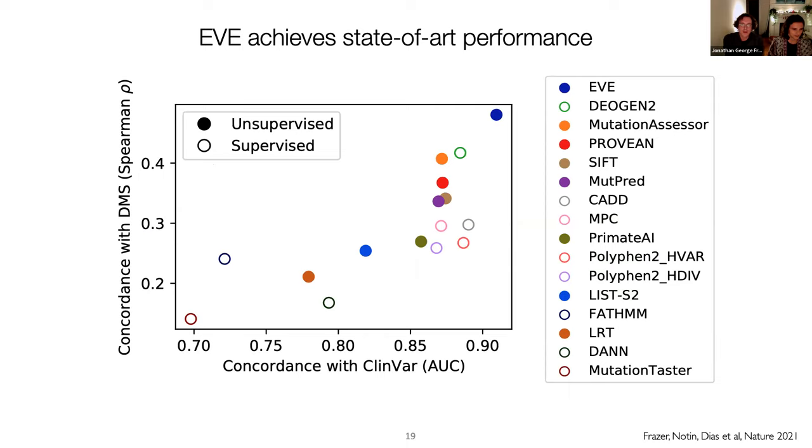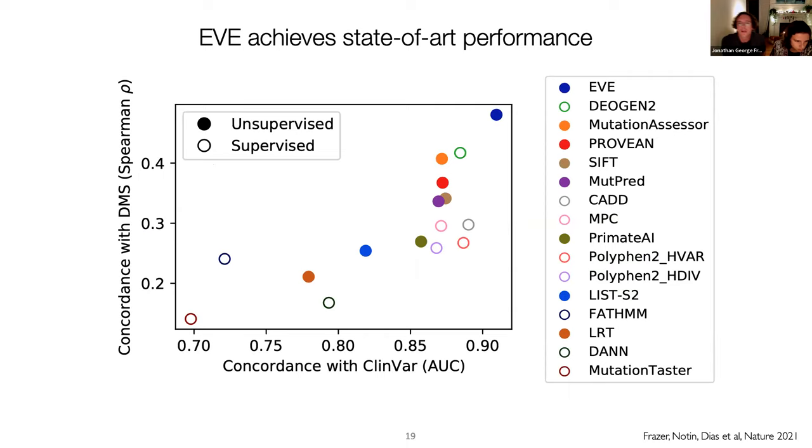So we also benchmarked the method against other computational models. And what we have here are, if the circle is filled, then it's other unsupervised methods. And if it's open circles, then these are supervised methods. We compared the model using two benchmarks, clinical labels. So AUCs against benign and pathogenic labels in ClinVar, and then concordance with deep mutational scans using Spearman correlation. And what was a very nice surprise for us was that we outperformed even supervised methods on this ClinVar benchmark.